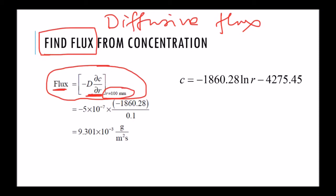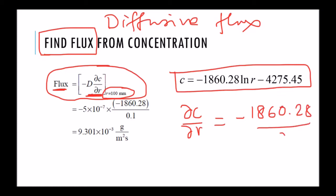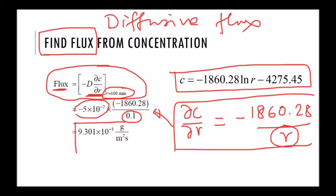We are talking about flux at R equal to 100 millimeter. So since my concentration equation looks like this, then my dC/dR is simply equal to minus 1860.28 over R d/dR of natural log. This is what I plug in here. So I put in numbers for the R because this is the location we are interested in at R equals 100, and this is my diffusivity value. That gives me flux. Notice the unit of flux, it is mass per unit area per unit time.